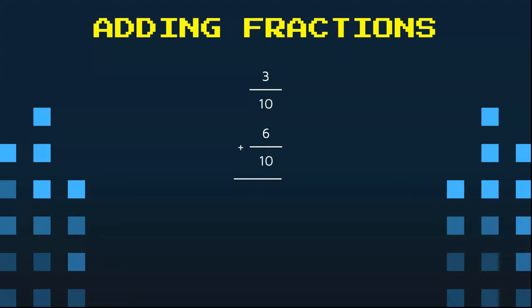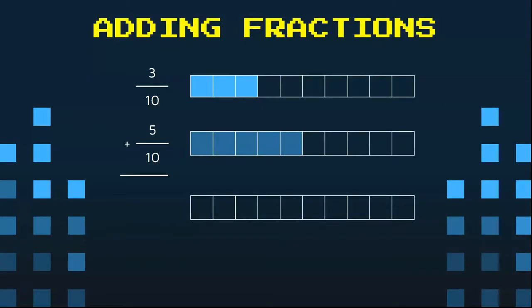Notice again that they're both tenths, right? Denominator is the same. Let's take a look at this in a model form. So let's say we have a bar. We have cut it into tenths.